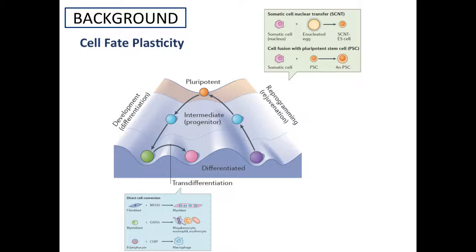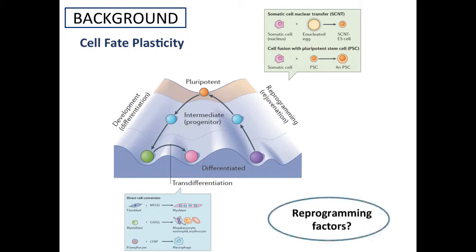Later, the development of embryonic stem cells and their fusion with somatic nuclei also highlighted that epigenetic memories could be erased. In addition, the profile of gene expression in somatic cells can be changed through fusion with other cell types or by introducing tissue-specific transcription factors that convert a differentiated cell to another lineage — a process known as transdifferentiation, or direct cell conversion. All these works suggested the existence of reprogramming factors that can change cellular fate.